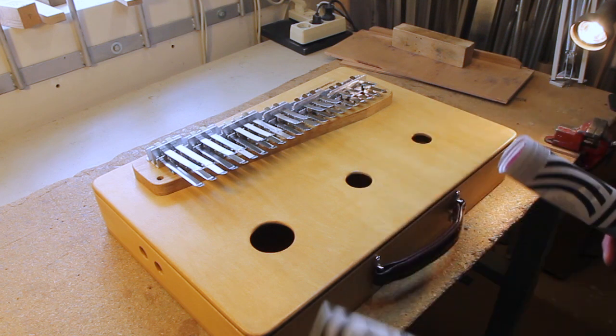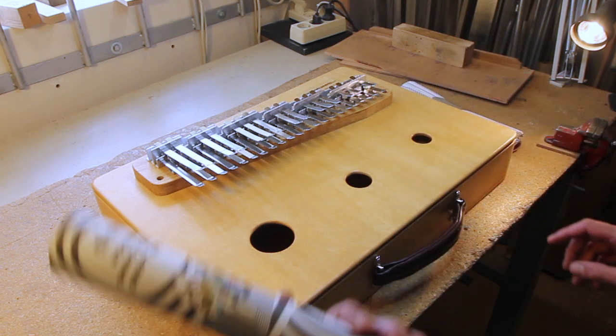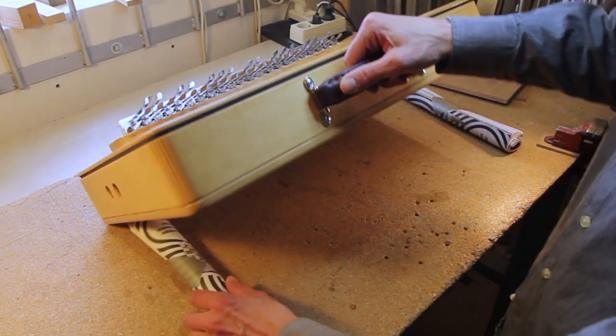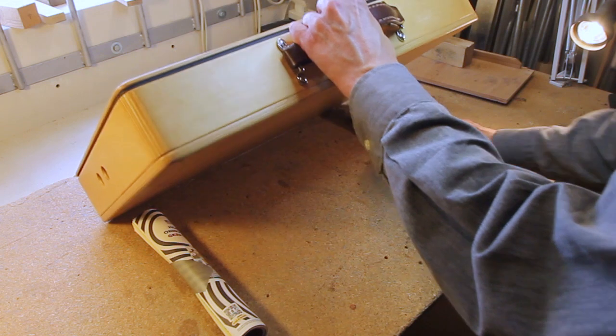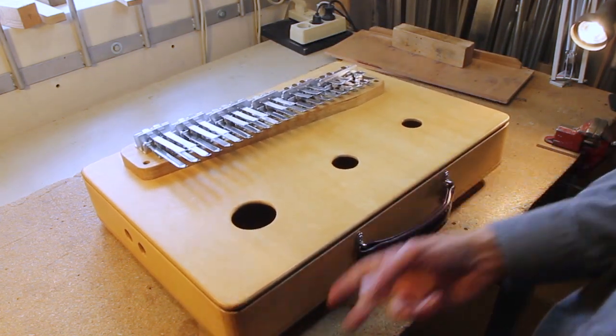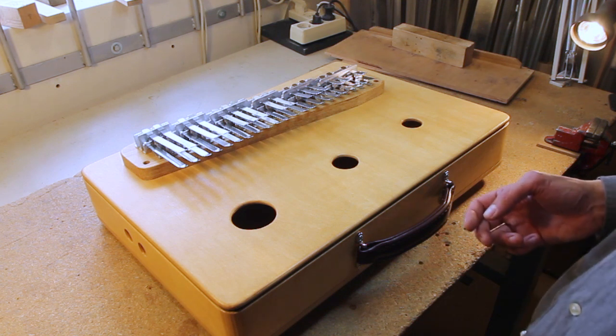One solution I had is just to raise it, put a folded magazine or a towel under the sides of the instrument. And it kind of lifts the whole instrument, an inch or something, from the table.